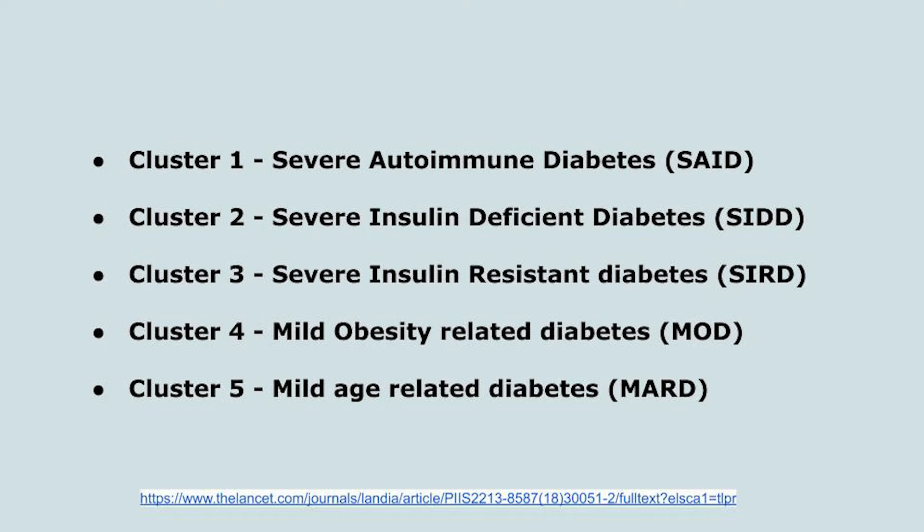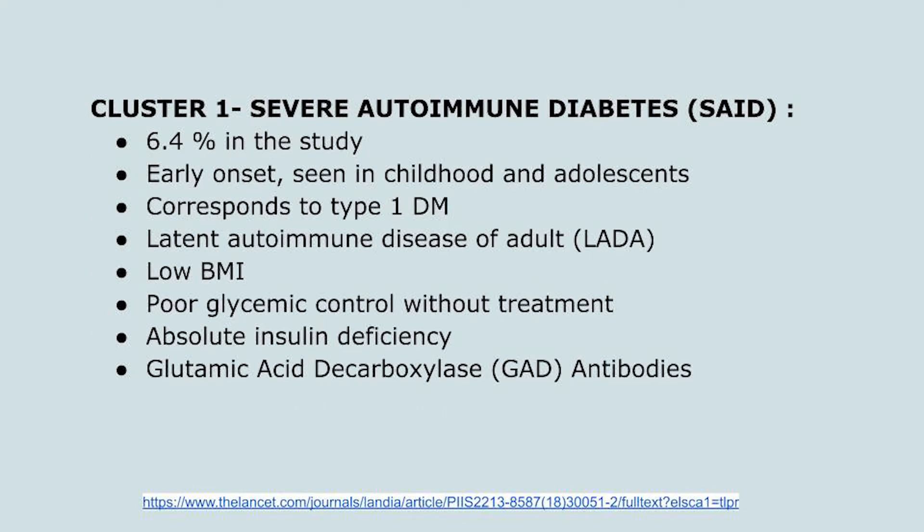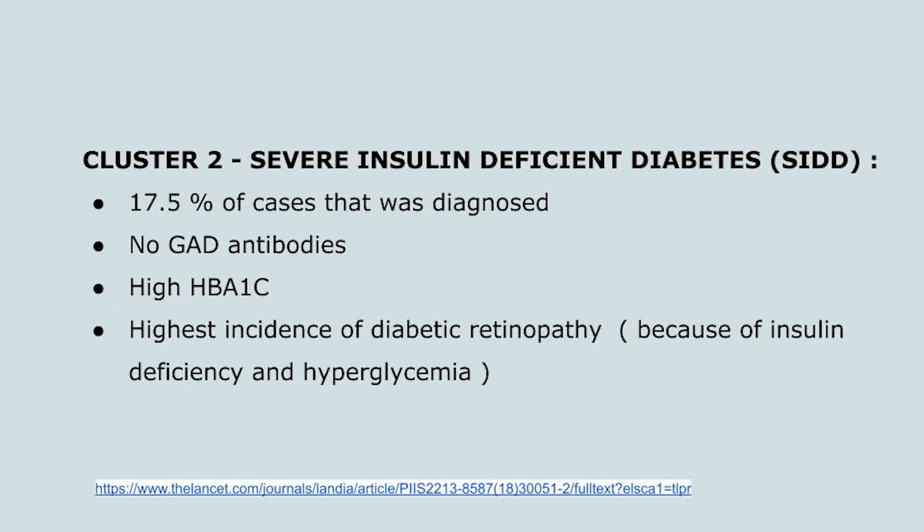The first cluster, severe autoimmune diabetes, comprised about 6.4% of the study population. This included younger patients — mostly children and adolescents with type 1 diabetes — as well as LADA (latent autoimmune diabetes of adults). They had lower BMI, poor glycemic control without treatment, absolute insulin deficiency, and positive GAD antibodies.